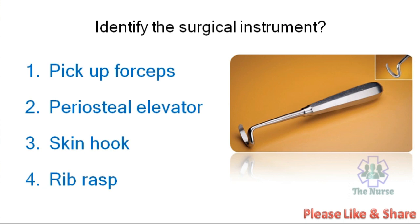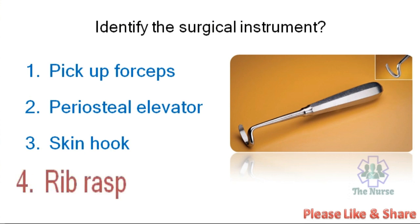Next question. Identify the surgical instrument. Options: Pick up forceps, Periosteal elevator, Skin hook, or Rib rasp. The correct answer is Rib rasp. It is used during chest surgery to remove the periosteal skin from the ribs.